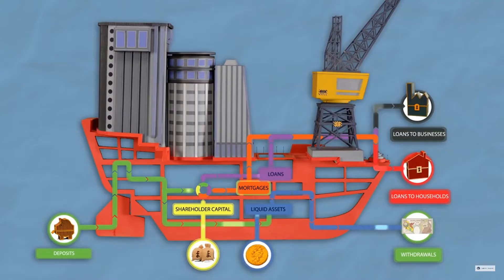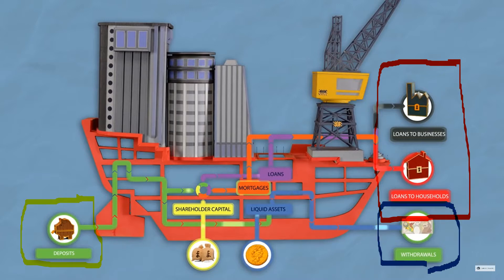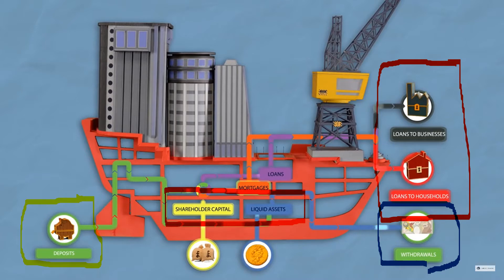So first of all let's have a look at how a bank operates. Effectively what a bank does is it takes deposits from households and firms, individuals operating within the economy, and then loans that money out to businesses and households. Now we also want to be able to go to our bank and withdraw money, so the bank can't lend out all the deposits it receives. It must keep some money within the bank, on this diagram indicated by the liquid assets and shareholder capital. Essentially the reserve ratio is the proportion of all the deposits that the bank has to keep within the bank so that people can be confident that they can make withdrawals.